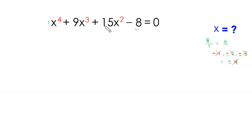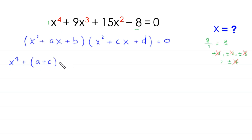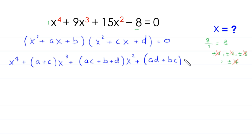So to find the solutions of this equation, let's use another trick. We suppose that this quartic expression on the left hand side is a product of two quadratic factors: x squared plus a times x plus b, times x squared plus c times x plus d, is equal to 0. If we expand this expression, this will become x to the power 4 plus (a plus c) times x cubed plus (ac plus b plus d) times x squared plus (ad plus bc) times x plus bd is equal to 0.